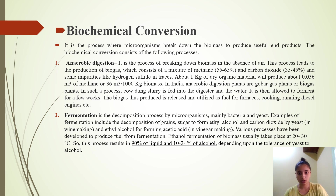About 1 kg of organic material will produce about 0.036 m³ of methane, or 36 m³ per 1000 kg of biomass. In India, anaerobic digestion plants are known as gobar gas plants or biogas plants. In such a process, cow dung slurry and water are fed into the digester and allowed to ferment for a few weeks. The biogas produced is then released and utilized as fuel for furnaces, cooking, running diesel engines, etc.